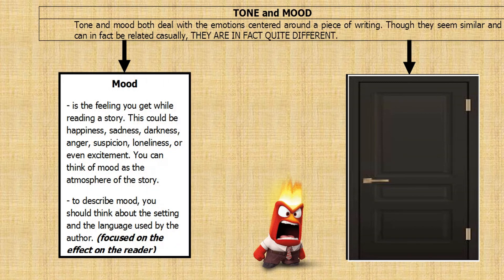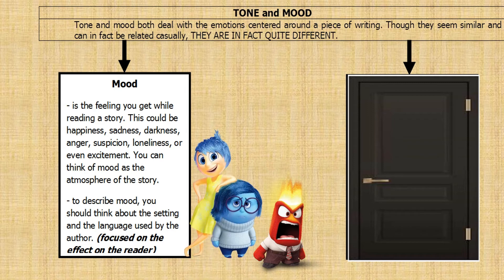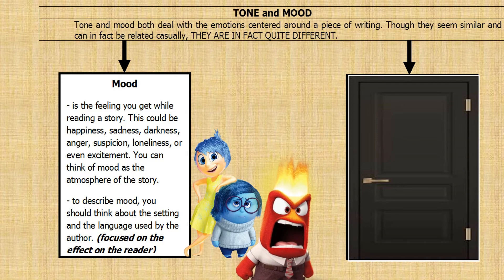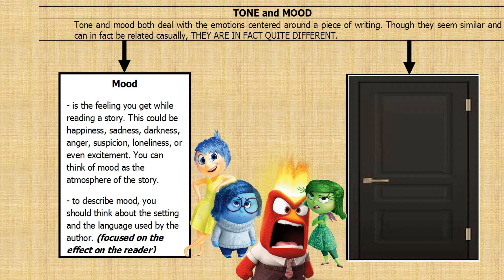Mood is the feeling you get while reading a story. This could be happiness, sadness, darkness, anger, suspicion, loneliness, or even excitement. You can think of mood as the atmosphere of the story. To describe mood, you should think about the setting and the language used by the author. Mood is focused on the effect on the reader.